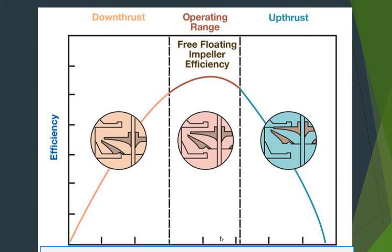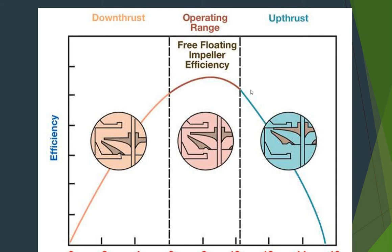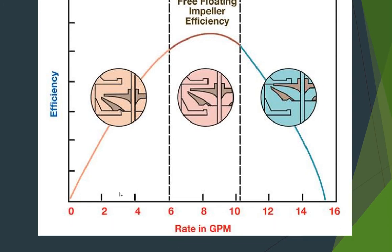This is the ESP characteristic curve. On the Y-axis we have efficiency and on the X-axis we have flow rate. This is the ESP efficiency curve. At lower flow rate we have an increase in efficiency as we increase the flow rate, and at higher flow rate we have a decrease in efficiency as we increase the flow rate. To understand why, we need to look at these three diagrams.